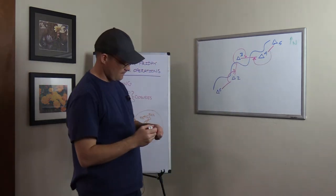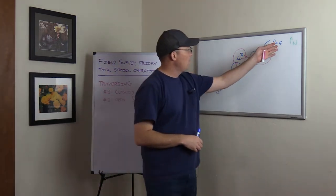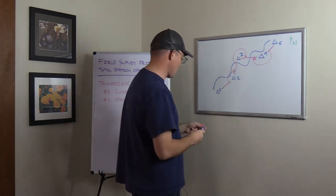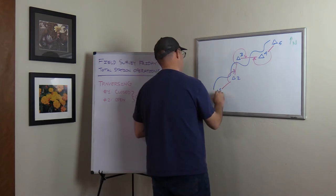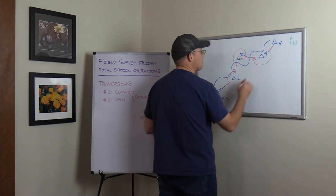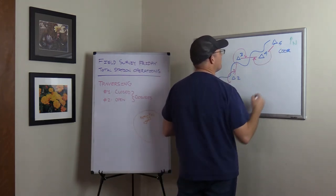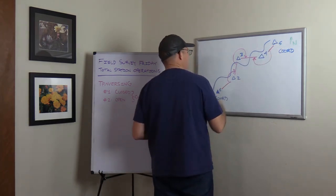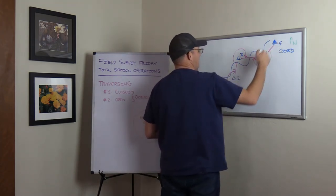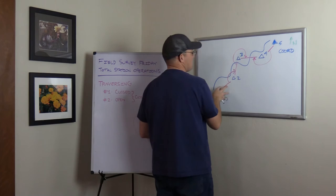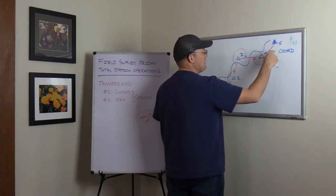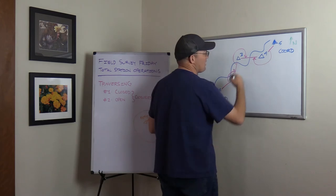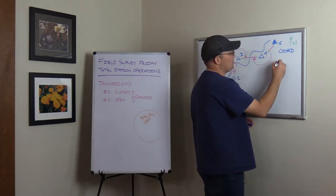The only circumstance in which this is okay is if you have a coordinate on one and you have a coordinate on five that you can check into. That's an open traverse, but you can calculate a closure because you've got a known coordinate on five. How do you get that? Let's just say you GPS one and five. Maybe you can't see along this canyon because of the trees and the mountains, but you get down here to an opening — a wide area in the canyon. You can GPS five and you can GPS one. Then you have a coordinate there.